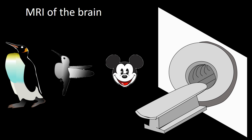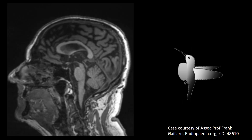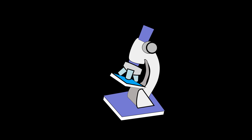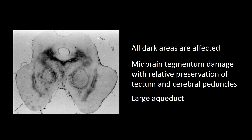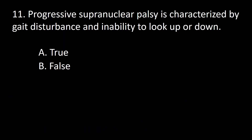The MRI findings have been associated with different animals: the penguin sign, the hummingbird sign, and the Mickey Mouse sign. The damage mainly involves the midbrain tegmentum with sparing of the tectum and peduncles, and the aqueduct of Sylvius is enlarged. So the answer to this question is true.